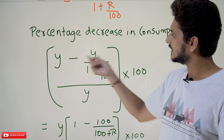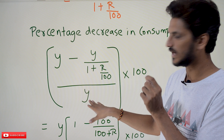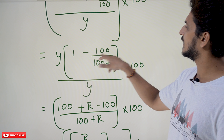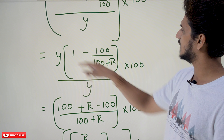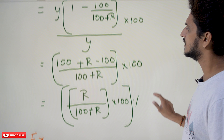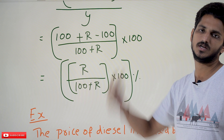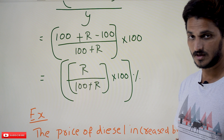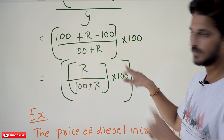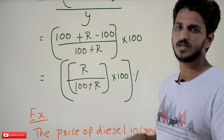So the percentage decrease in consumption is: actual consumption minus reduced consumption, divided by actual value, multiplied by 100. That gives y times (1 minus 100/(100 plus r)) divided by y, multiplied by 100. The y's cancel, and taking the numerator: (100 plus r minus 100) divided by (100 plus r), multiplied by 100. The 100s cancel, leaving r divided by (100 plus r), multiplied by 100 percent — which is exactly the equation stated above. So if a commodity increases by r percent, the consumption should be decreased by r/(100+r) × 100 percent.